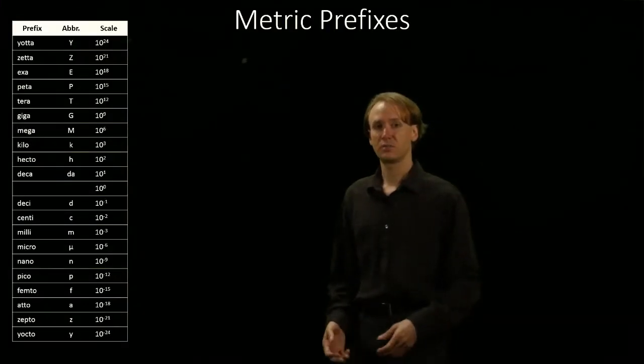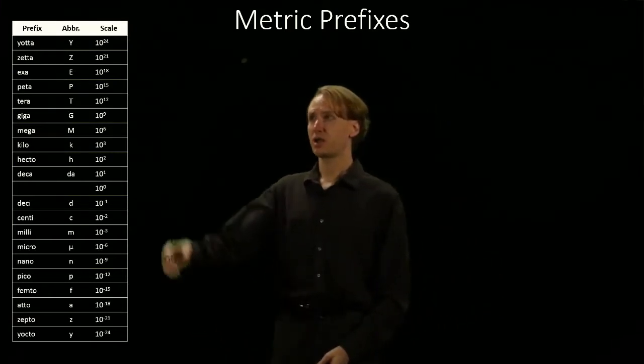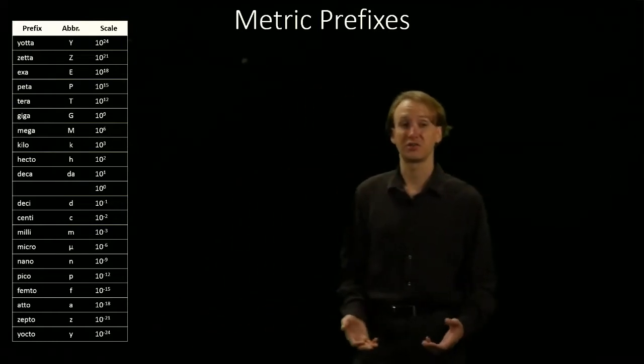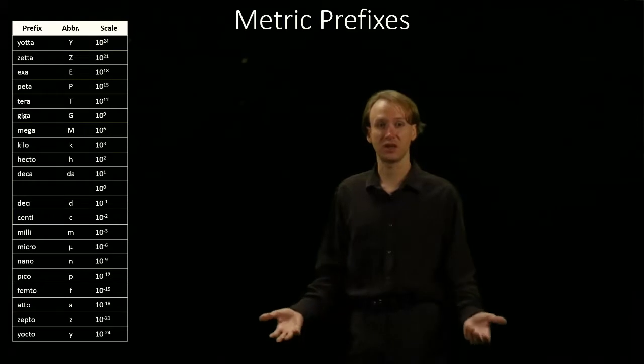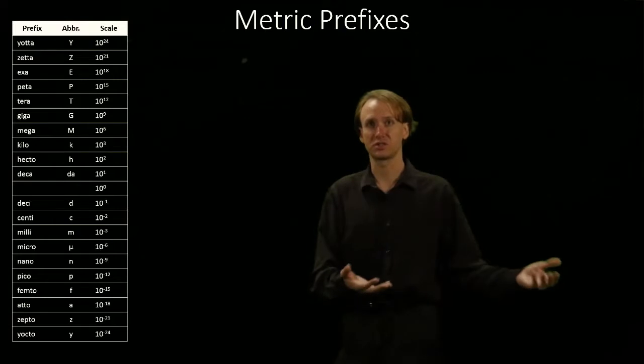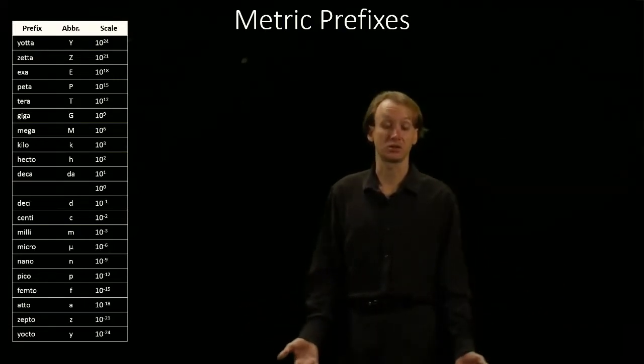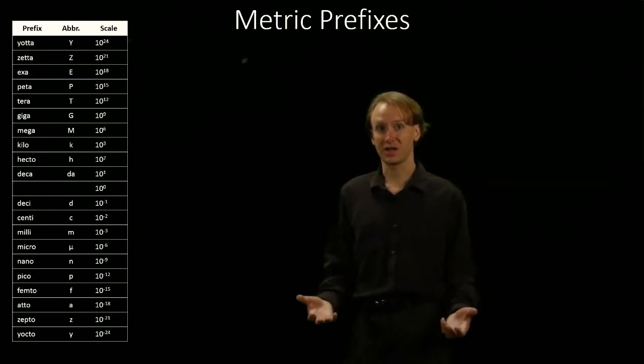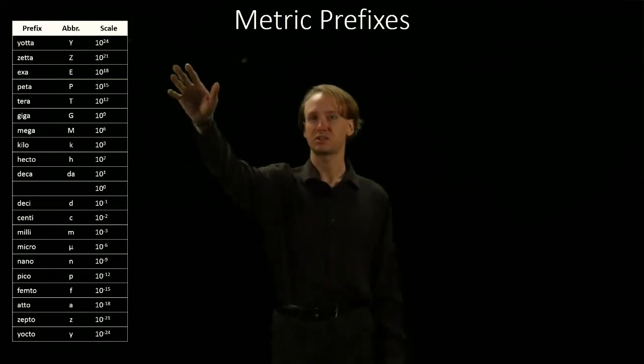As an example of something that's very large, the diameter of the observable universe is about 870 yottameters. The observable universe is very, very large, but I'm able to say just 870 yottameters. I don't have to say 870 with 24 zeros or even 870 septillion meters. Any of those can be very large and complex, and in a lot of cases we're used to seeing things at these scales.